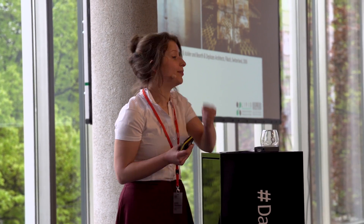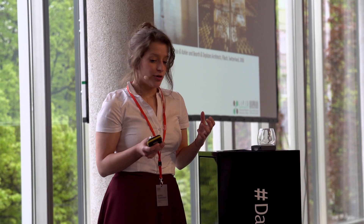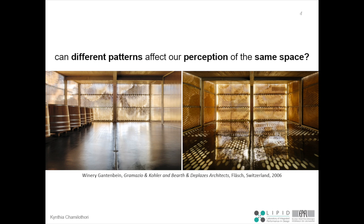The same question can be applied when discussing the same space. Here we have the example of a winery in Switzerland. On the left, we have a space with a very diffuse lighting pattern — a diffuse lighting situation. While on the right, it's the same space but in another moment in time, with direct sunlight, and this brings a dramatic pattern that completely transformed the space.